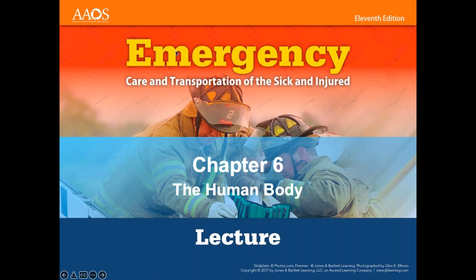We're going to cover Chapter 6, The Human Body — an overview of the human body. This won't be super in-depth on different systems; we'll cover those in upcoming chapters. For example, when we talk about respiratory emergencies, we'll hit hard on the respiratory system. It's an overview of organs, systems, how things work, and then more in depth as we move forward.